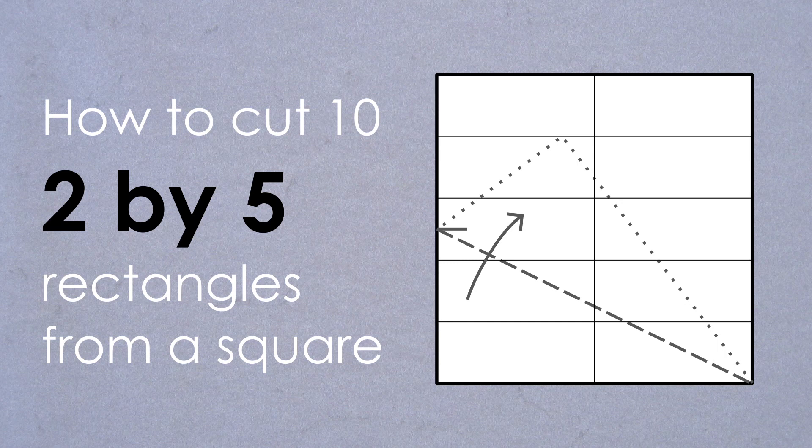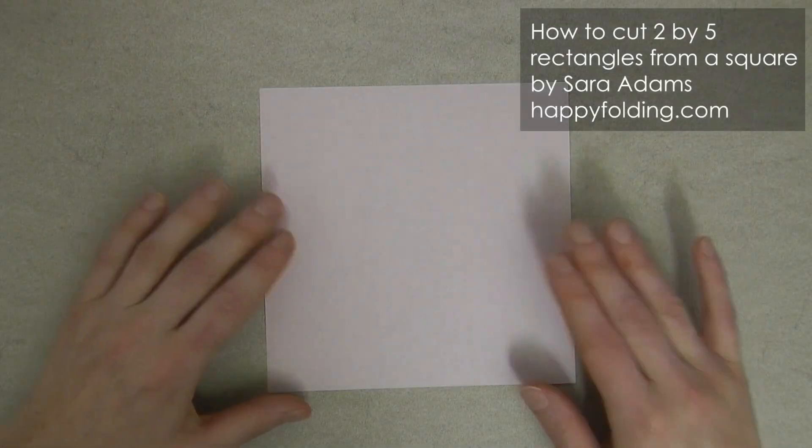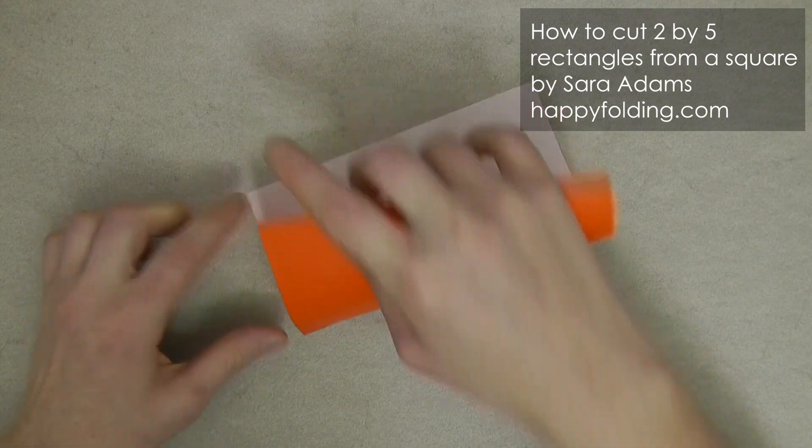In this video, I'm going to show you how to cut 2 by 5 ratio rectangles from a square. First, pinch on the side to mark the halfway point.